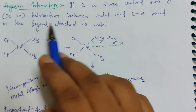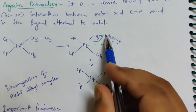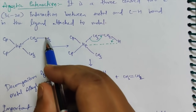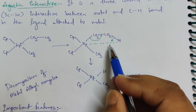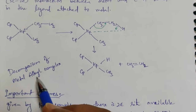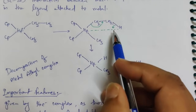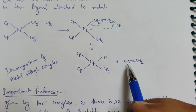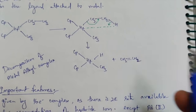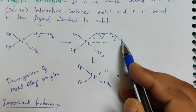The agostic interaction is a three-centered, two-electron interaction between the metal and the C-H bond in the ligand attached to the metal. You can visualize it as three centers with only two electrons involved. What happens is that the beta hydrogen interacts with the metal complex — this kind of interaction is called agostic interaction. Decomposition of the metal-alkyl complex generally happens when there is this kind of agostic interaction.